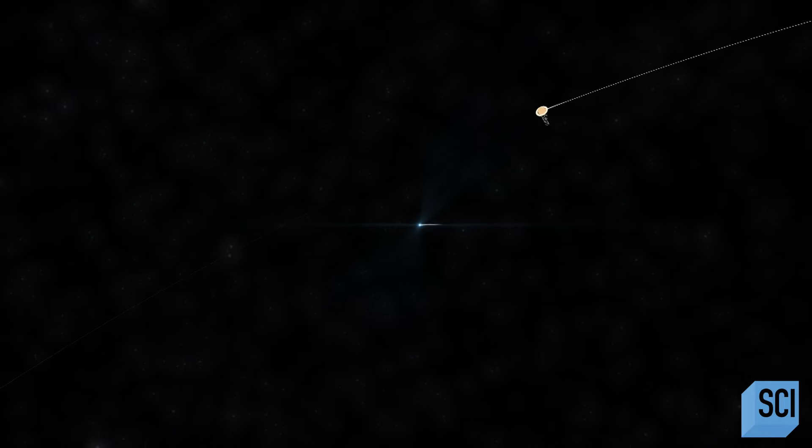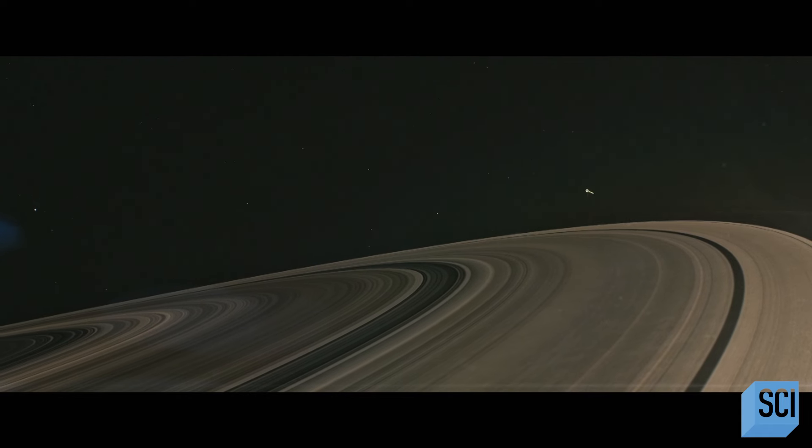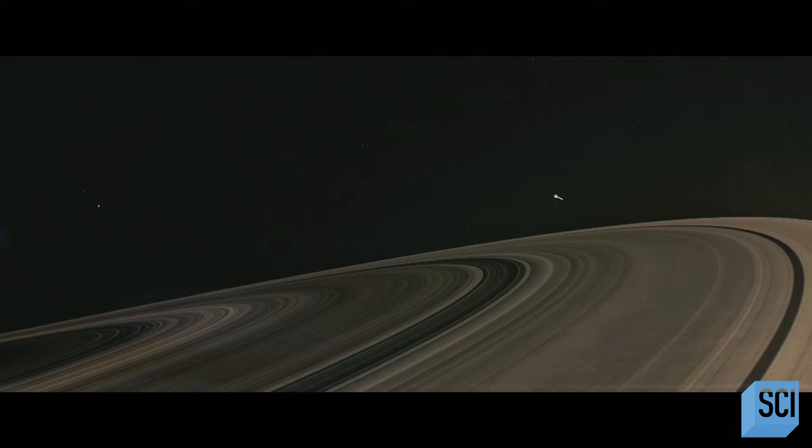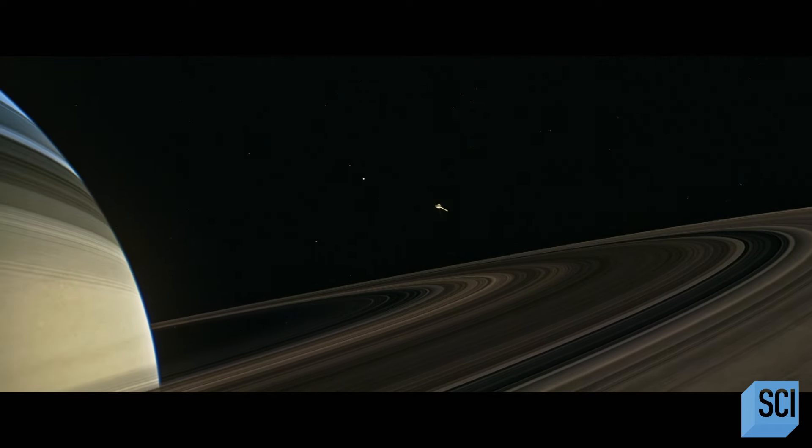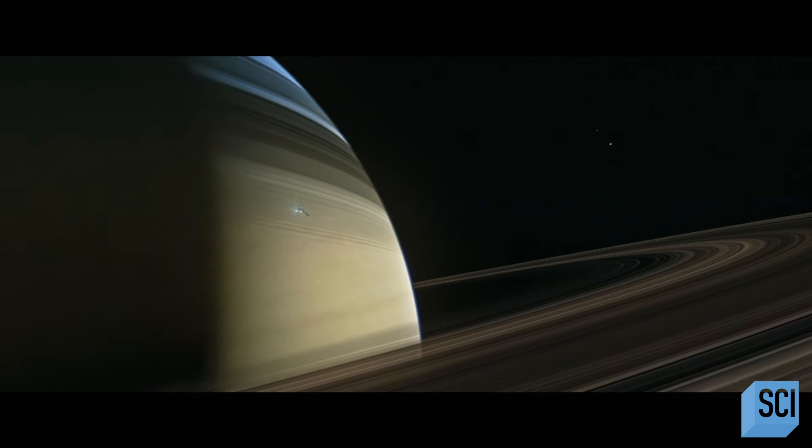Once Cassini was approaching Saturn, it had to perform possibly its most critical maneuver of the mission, a perfectly timed engine burn that would slow it down enough to be captured in orbit by the giant planet. Saturn orbit insertion was obviously incredibly nerve-wracking. We spent seven years guiding the spacecraft to get to Saturn, to get it into orbit. If it hadn't done the orbit insertion, which was a 90-minute burn on the main engine, we'd have been a Saturn flyby and just gone on out in space. The Doppler has flattened out.